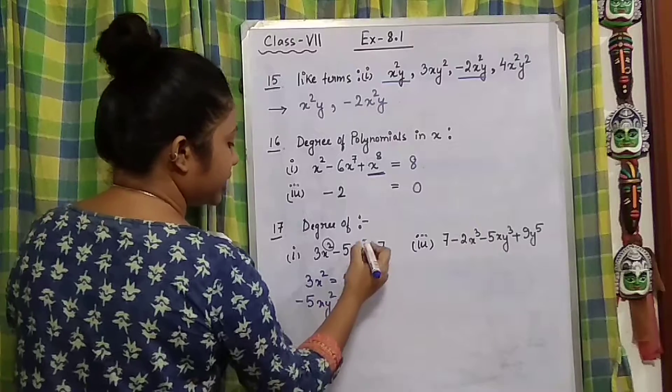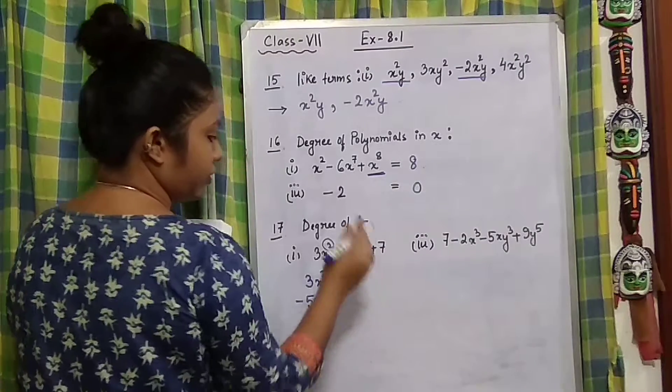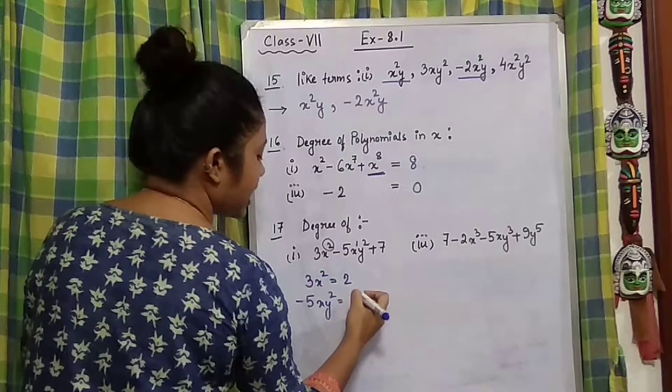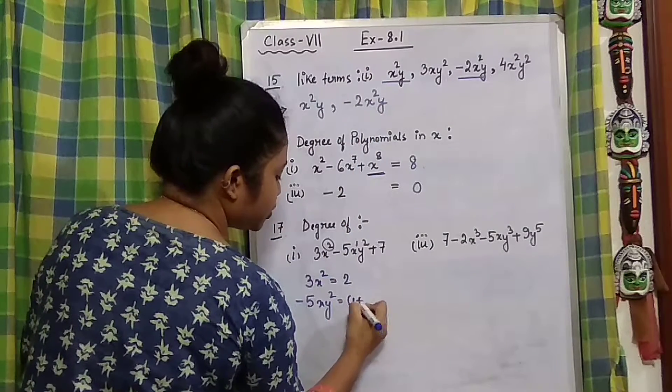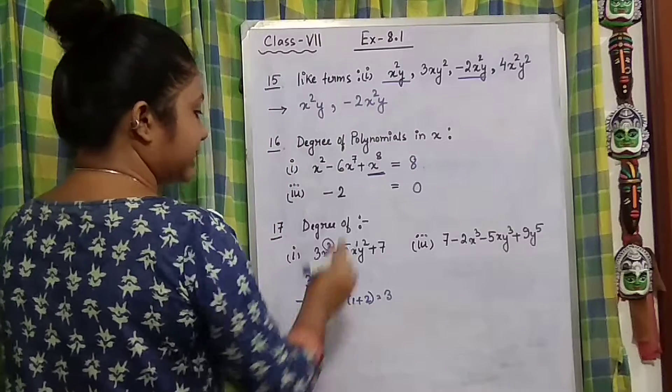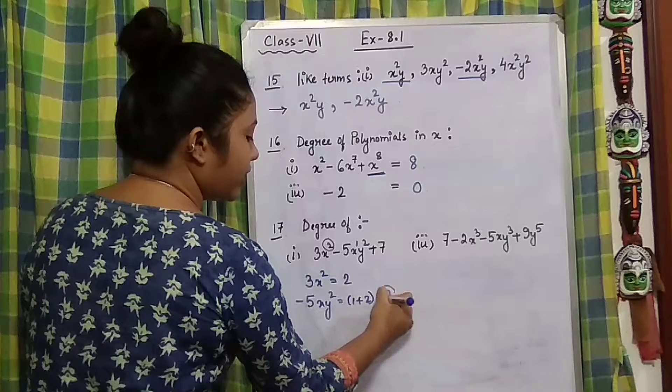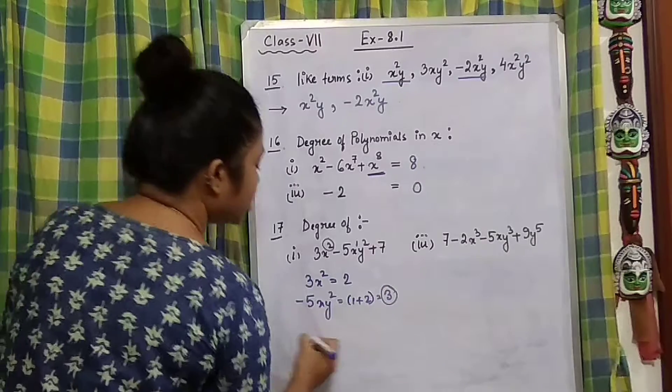what will be the degree? The power of y is 2 plus the power of x which is 1 - that means 1 plus 2, which equals 3. And 7 is the constant. So among 2 and 3, which is bigger? 3 is bigger.